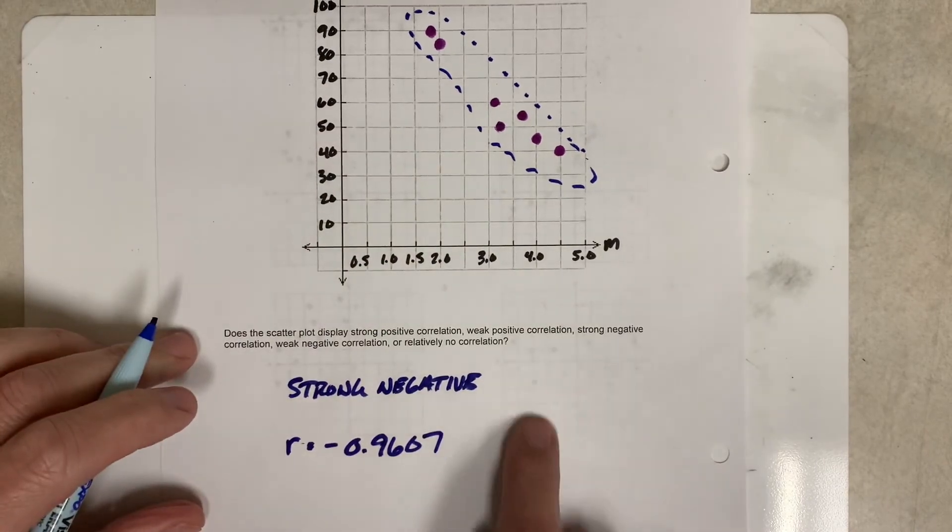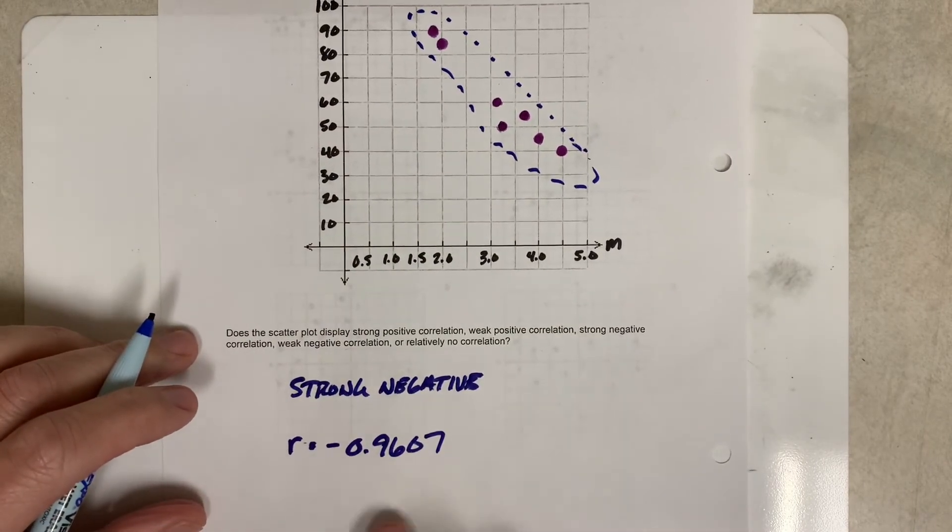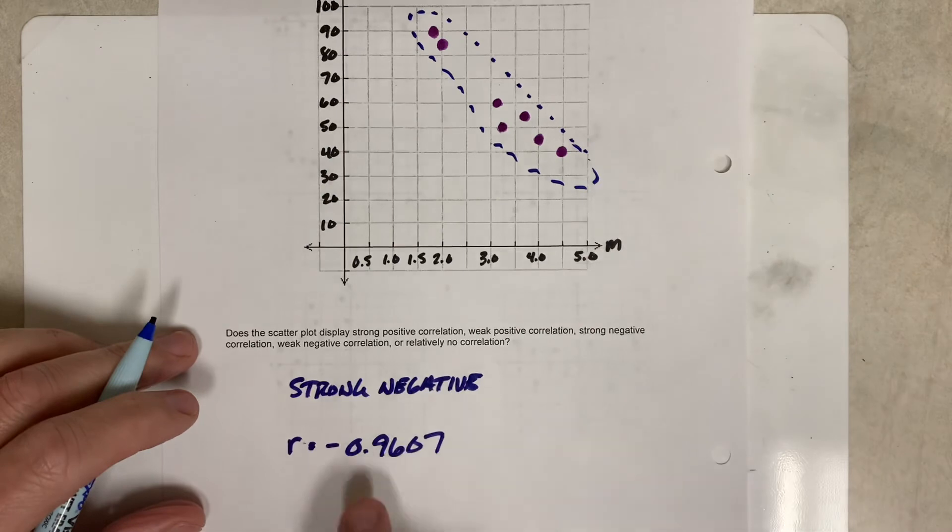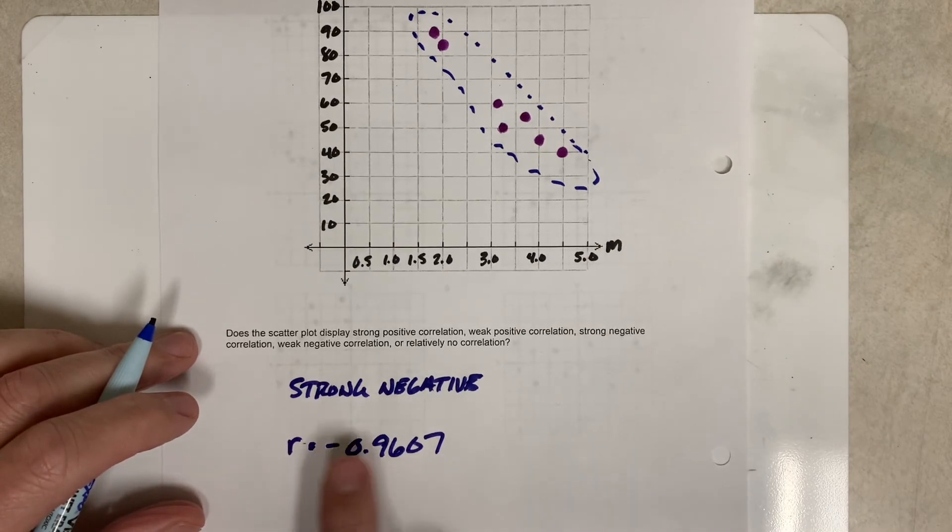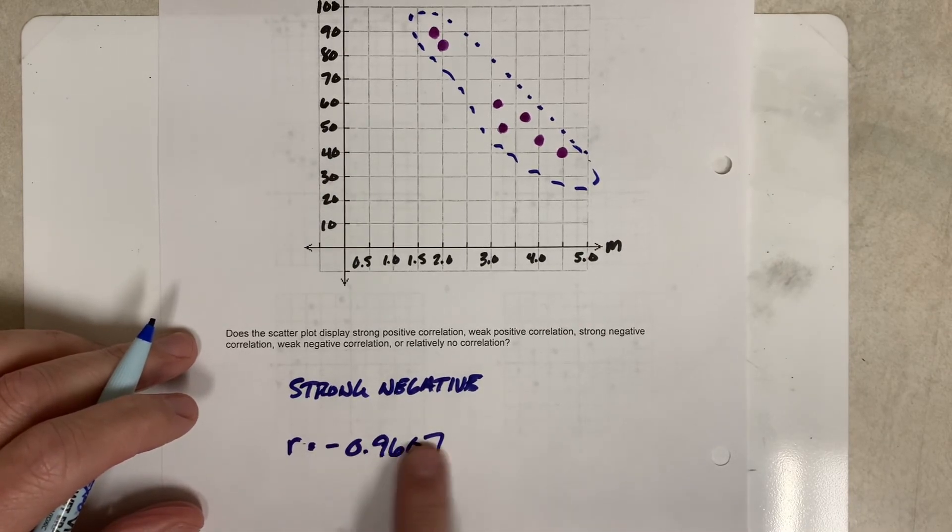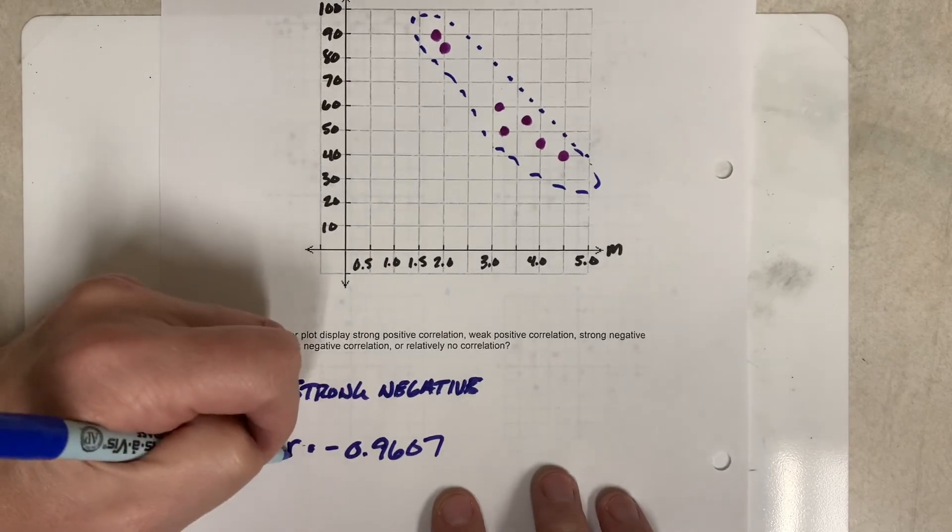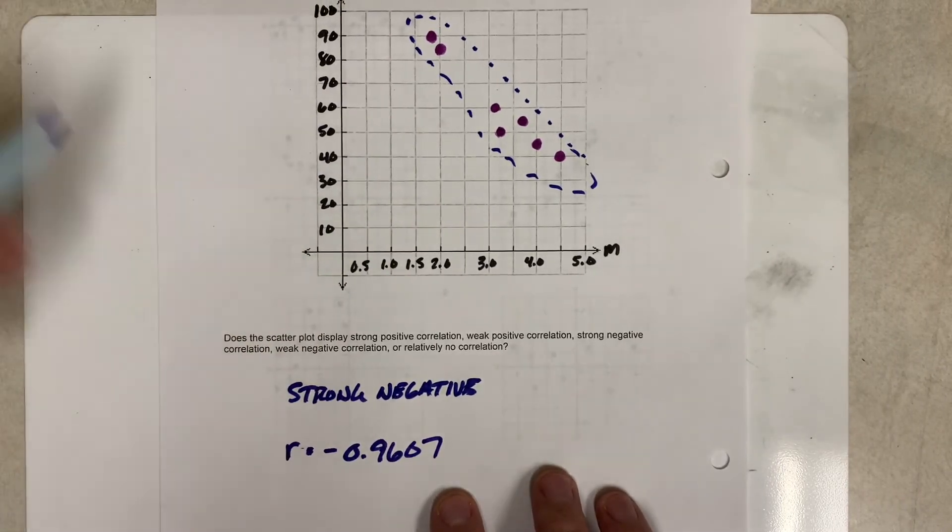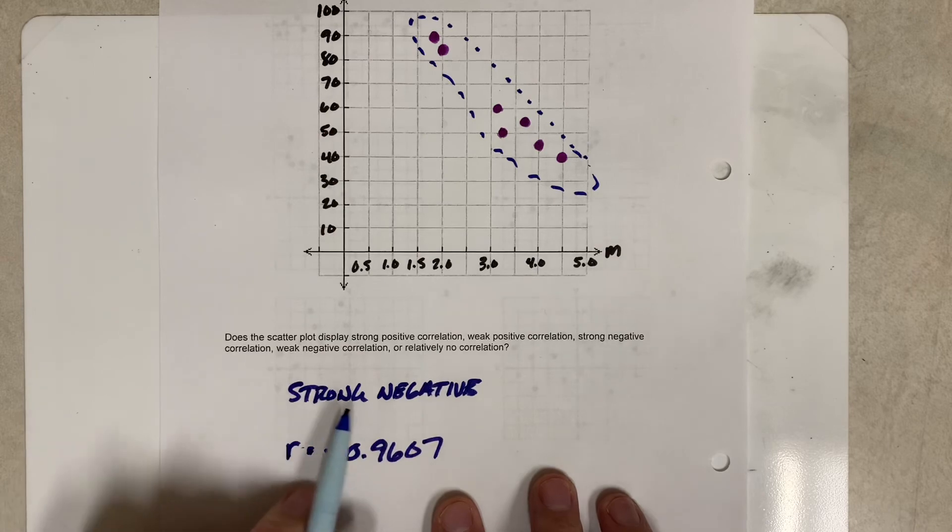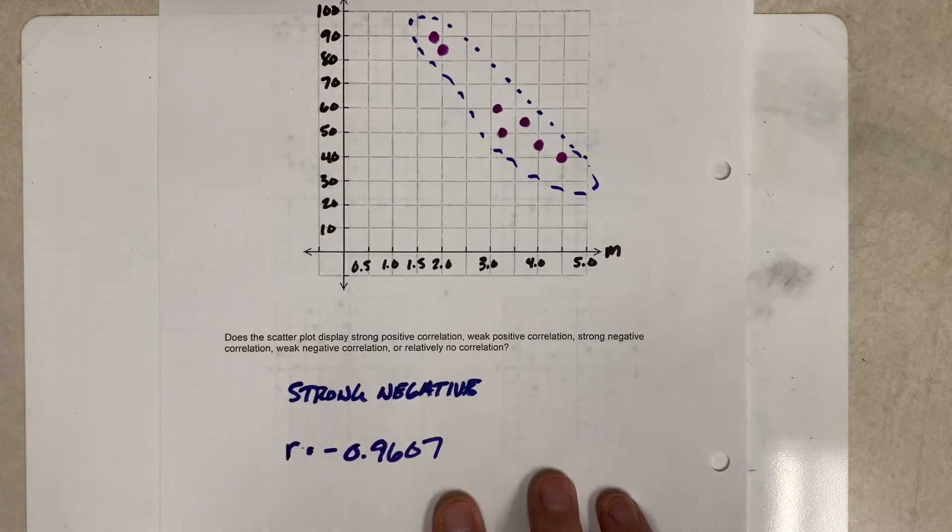Now a lot of problems on the EOC will give you that r value, and you have to interpret it. That means that this data is very strong and a strong negative because you're really close to negative one here. And so without knowing a whole lot about correlation coefficients, you will later. I'm now pretty confident in my answer of strong negative, but then I was at the very beginning anyway because of how tightly those dots were around each other.